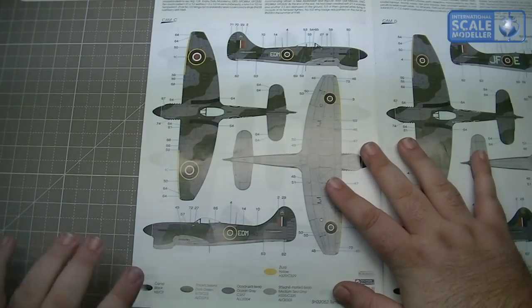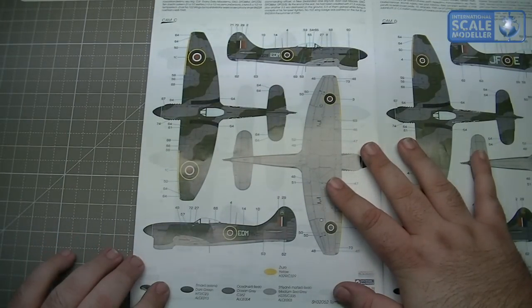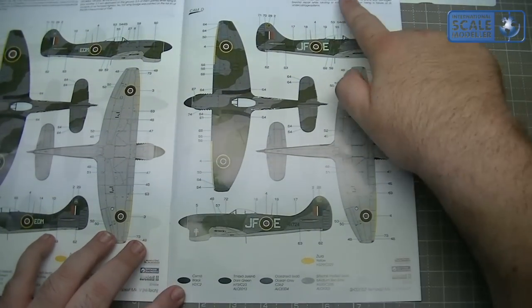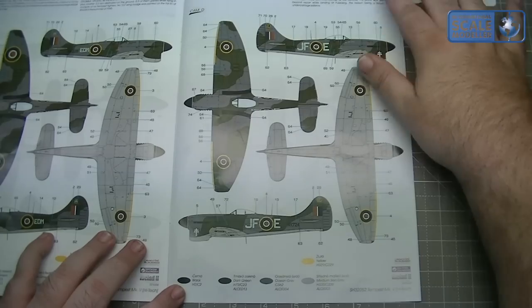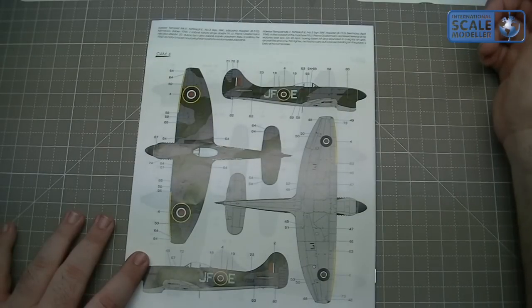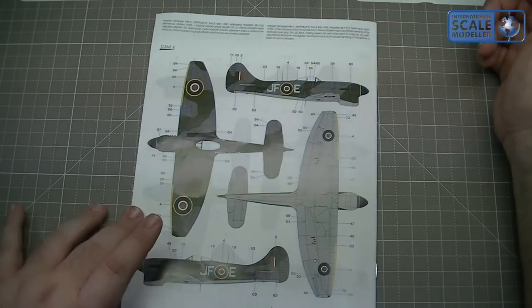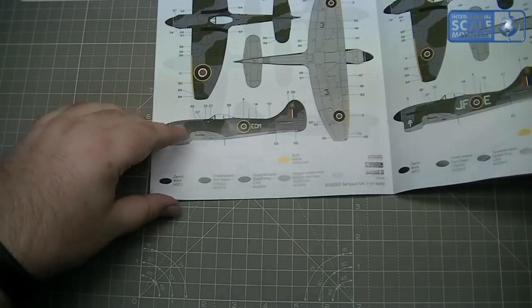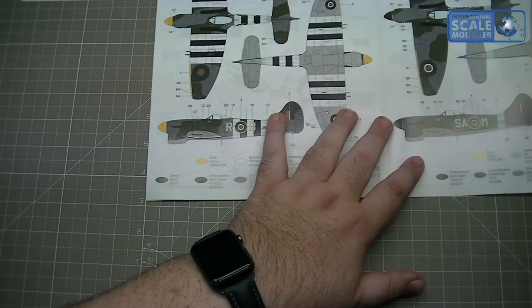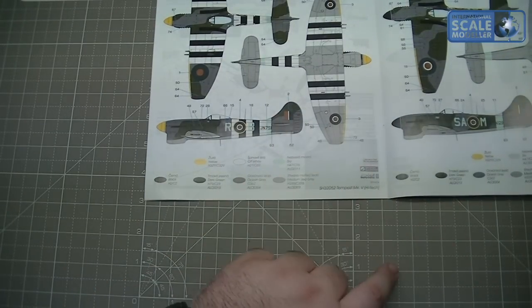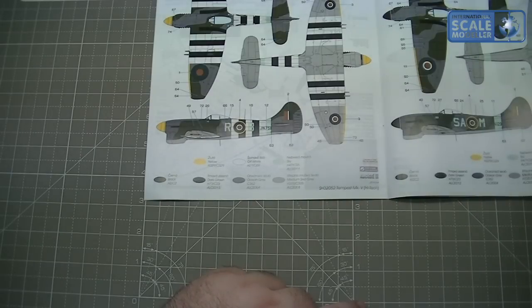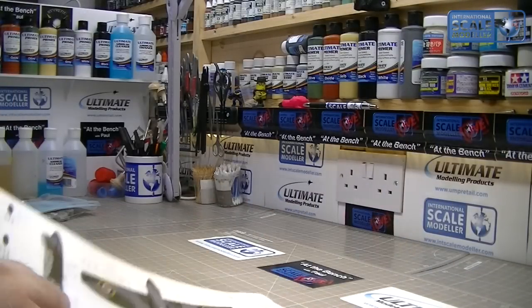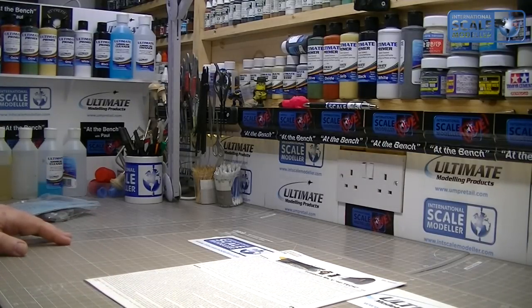Overall those instructions, while they look really good, busy and quite like 'oh my god,' they're actually not that bad at all. You've got five schemes. First one is 150 Wing, Castle Camps, Dublin, 1944 - you've got your Invasion ID stripes, yellow nose. Quite like that one, that's probably the one I'll do because I like Invasion stripes on late war aircraft. They look absolutely amazing. Each one has the color card at the bottom - dark green, ocean grey, medium sea grey, etc.